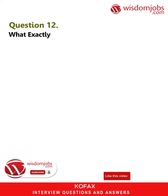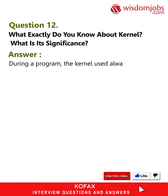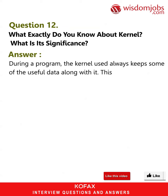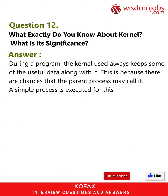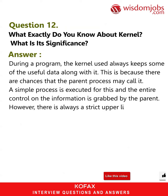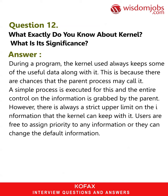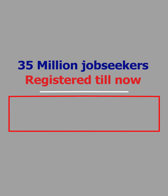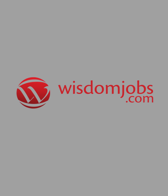Question 12: What exactly do you know about the kernel and its significance? During a program, the kernel always keeps some useful data along with it, because there are chances that the parent process may call it. A simple process is executed for this and the entire control on the information is grabbed by the parent. However, there is always a strict upper limit on the information that the kernel can keep. Users are free to assign priority to any information or change the default information.